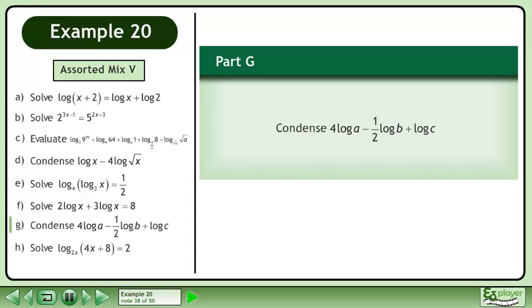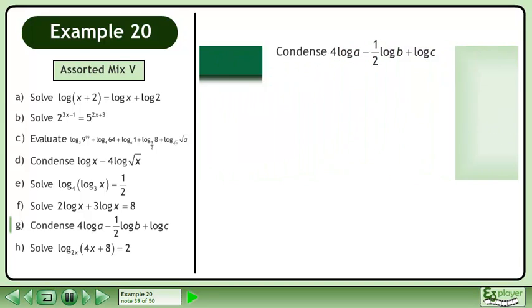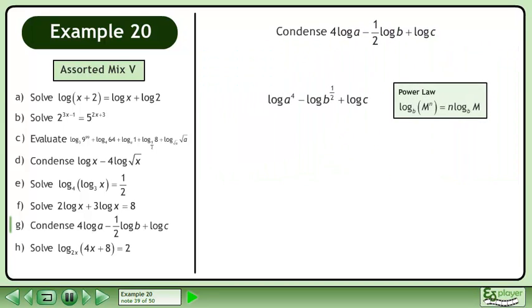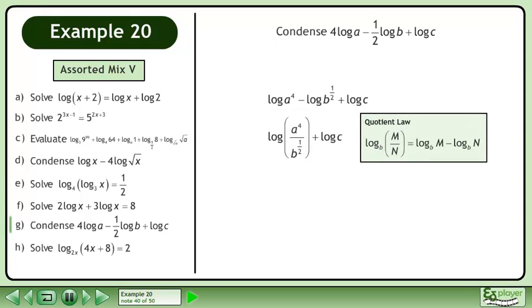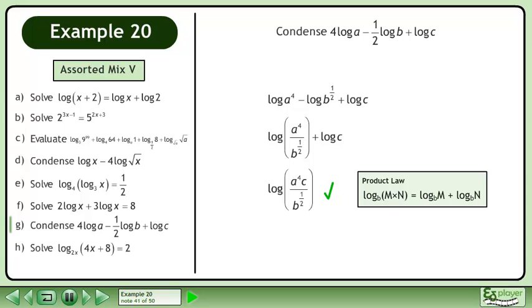In Part G, condense 4 log a - (1/2) log b + log c. Condense using the power law in reverse. Condense using the product law in reverse. Condense using the product law in reverse.